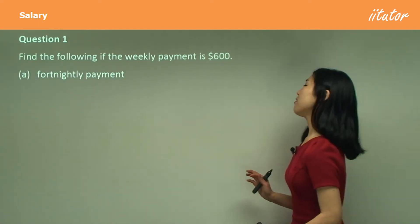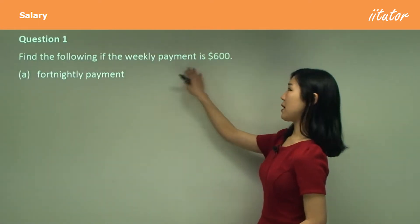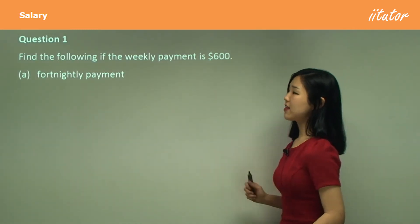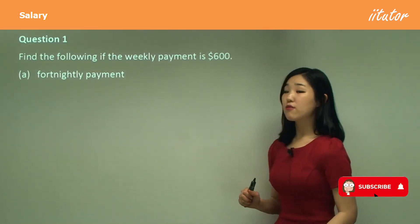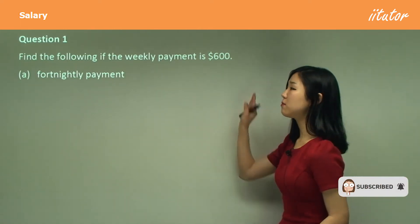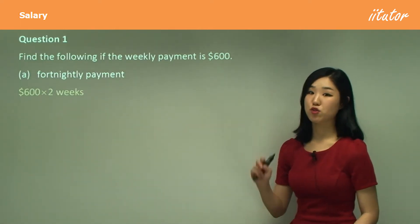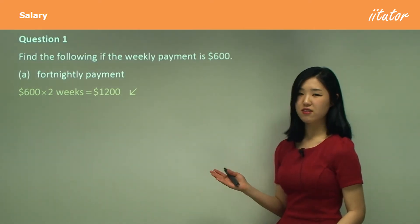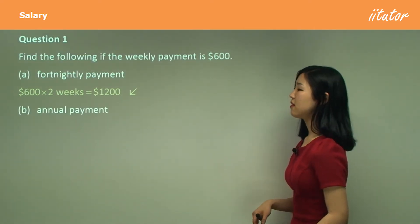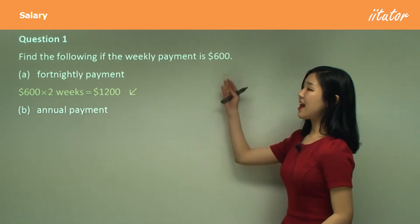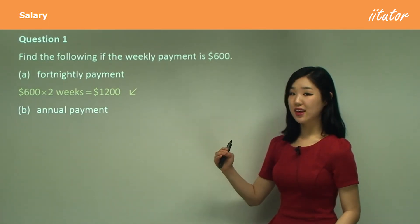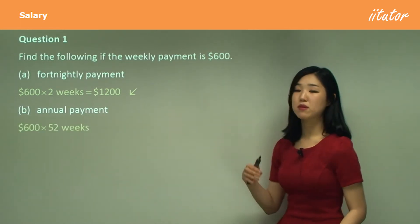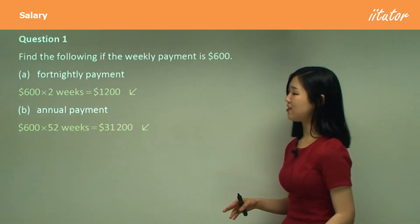Question one: find the following if the weekly payment is $600. So they give you the weekly payment. Now let's get the fortnightly payment. We know that a fortnight is two weeks, so we simply need to multiply the weekly payment by two weeks. Now annual payments — how many weeks in a year? There's 52, so we simply need to multiply the weekly payment by 52. That's it.